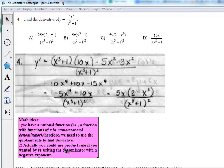And notice that you could use the product rule if you wanted because you could rewrite the denominator as being to the negative 1 power. So the big main math idea is that you have a rational function and you need to use the quotient rule.